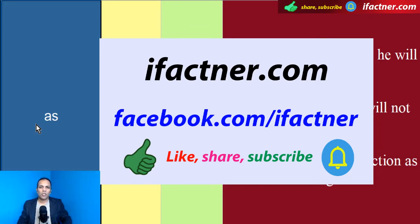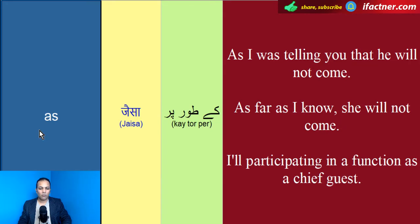Aakhir mein hogi chhoti si exercise. Toh shuru kertay hain apna aaj ka video tutorial. 'As' ki spelling hoti hai A-S. As ka meaning hota hai 'jaysa ke' ya 'toor per'.